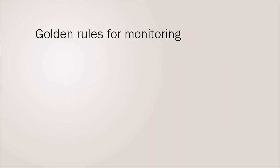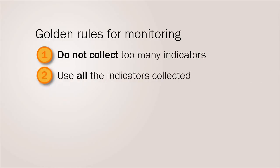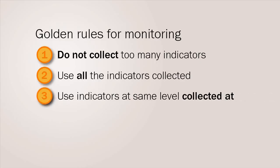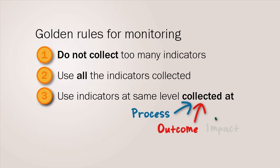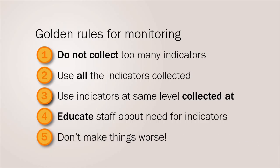Golden rules for monitoring: do not collect too many monitoring indicators, or collect indicators too often. Use all the monitoring indicators you collect, and discard indicators that aren't used. Use the monitoring indicators at the level that they are collected at — as process, outcome or impact. Educate staff about the need to collect monitoring indicators. And don't make things worse — don't destroy a monitoring system that works.